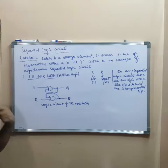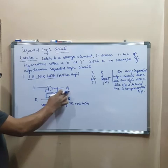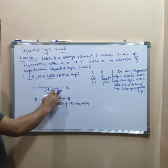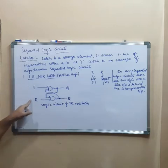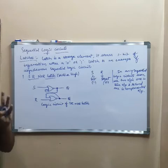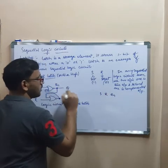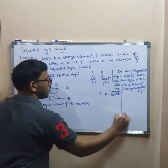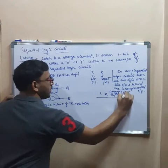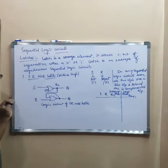If you take the truth table of this circuit, how many inputs are available? Two — S and R. Also, this output is called the next state, Q(n+1). And it has the present state Q(n). So there are three input variables: S, R, and Q(n) — which is the present state. The next state is Q(n+1). As there are three inputs, there will be eight combinations.